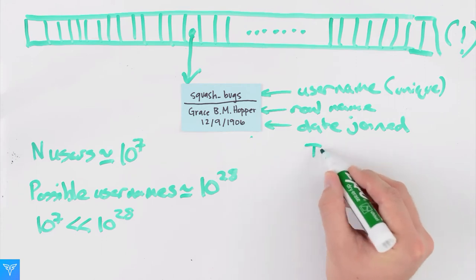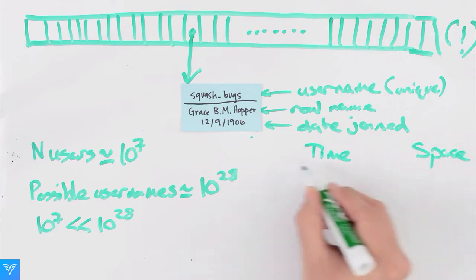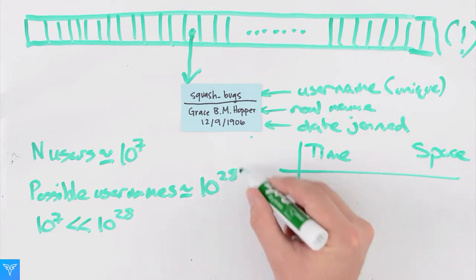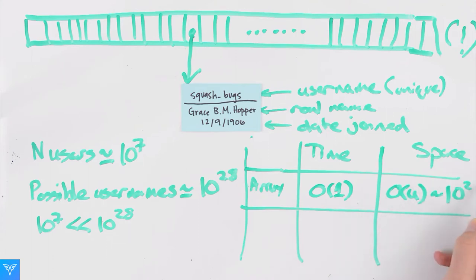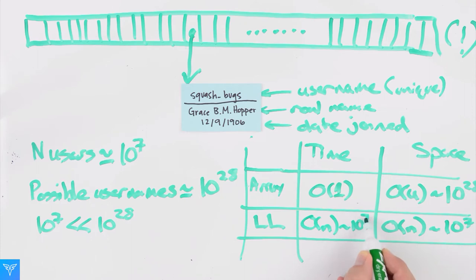Let's compare the linked list and array solutions. If we have 10 million users and 10 to the 28 possible usernames, using the array method, lookup is incredibly fast, order one. But the space needed is of the order of the size of our universe, 10 to the 28. Using a linked list, the space we have is the best possible, one node per user. But unfortunately, when looking for a user, we may have to traverse the entire list.